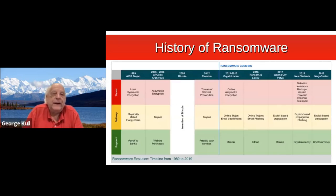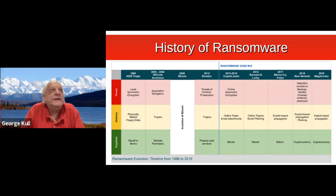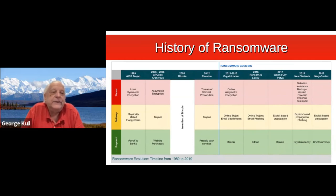Here's a history of ransomware starting in 1989, near the very beginning of the internet. It's called the AIDS Trojan, published by a disgruntled doctor. There was an AIDS conference happening, and he managed to insert this virus onto a floppy disk going out to all prospective attendees. You'd put the floppy in your computer and it gets infected. The payoff went to a bank. It really wasn't that dangerous or well thought out, but it was the first instance.